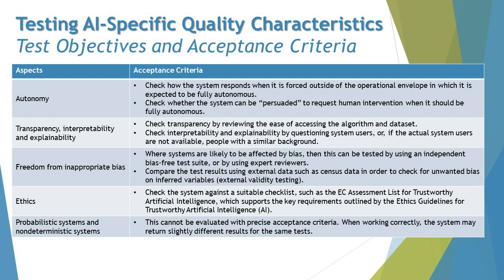The next characteristic is freedom from inappropriate biases. Where systems are likely to be affected by bias, this can be tested by using an independent, bias-free test suite or by using expert reviewers. Additionally, compare test results using external data such as census data in order to check for unwanted biases on inferred variables — this is external validity testing.